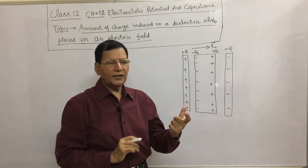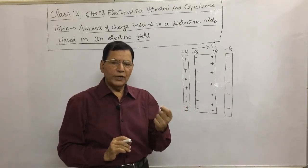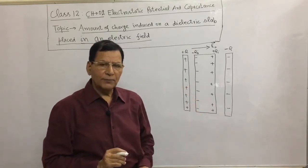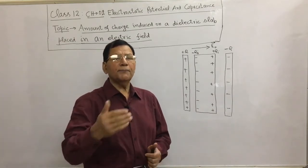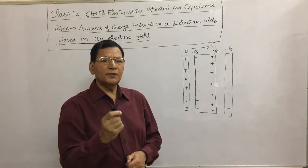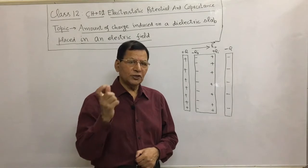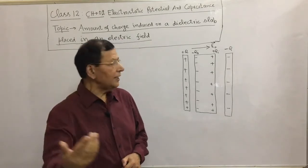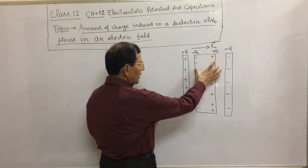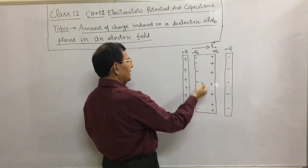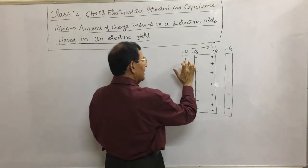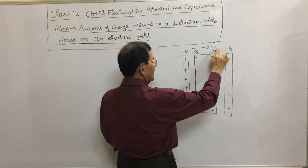A uniform electric field is one in which the magnitude and direction of the electric intensity are the same everywhere. We can obtain such a field between the plates of a charged parallel plate capacitor, directed from positive plate towards the negative plate. That field is E0. When the slab is kept inside, polarization occurs: one side acquires negative charge and the other acquires positive charge.